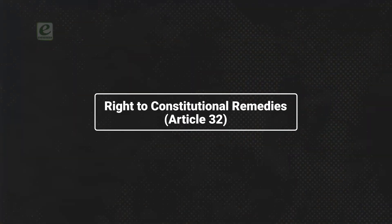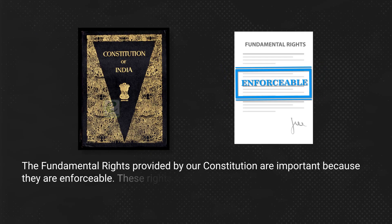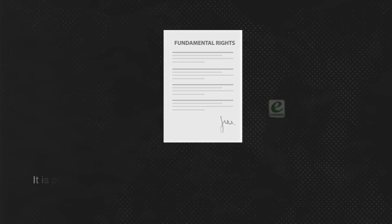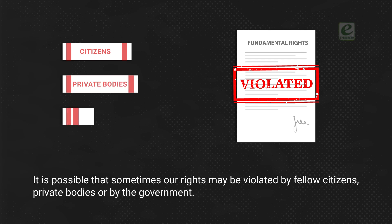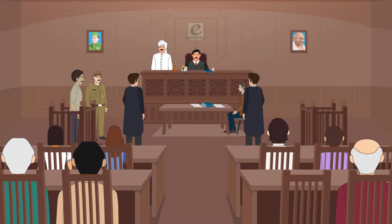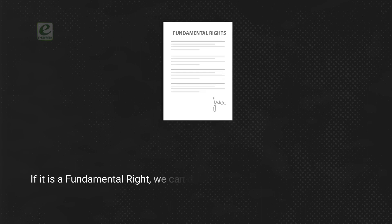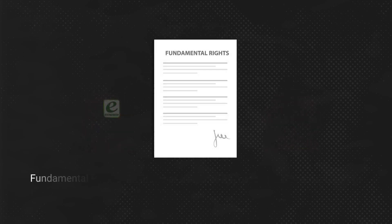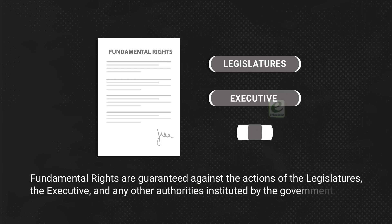Right to Constitutional Remedies, Article 32: The fundamental rights provided by our Constitution are important because they are enforceable through the Right to Constitutional Remedies. It is possible that sometimes our rights may be violated by fellow citizens, private bodies, or by the government. When any of our rights is violated, we can seek remedy through courts. If it is a fundamental right, we can directly approach the Supreme Court or the High Court of a state. Fundamental rights are guaranteed against the actions of the legislatures, the executive, and any other authorities instituted by the government.